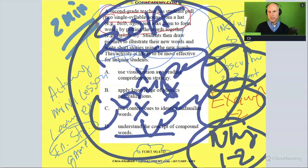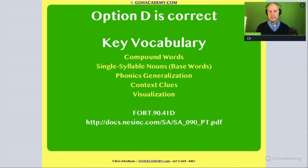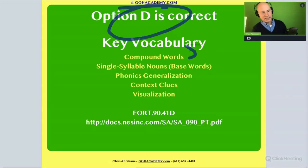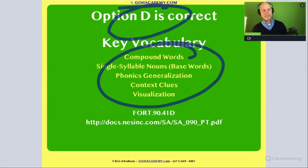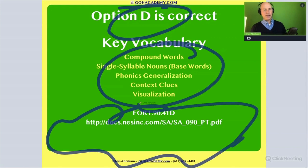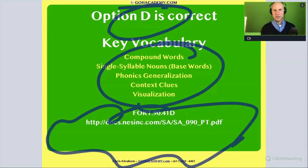So team, don't underestimate this stuff. These questions are giving you the instructional strategies that you can put in your essays if you ever saw a student struggle with these specific ideas. Don't underestimate the question. The answer is D — lots of review of lots of ideas. And even though it's an old one, it's a good one. Now let's go to the next question.